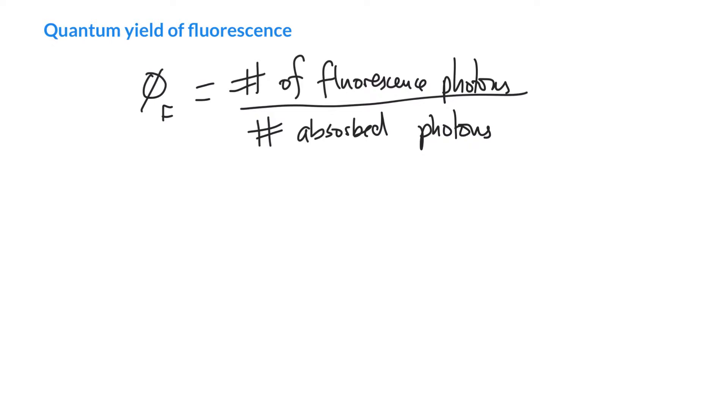Zero just means that no fluorescence photons come out. And one means that every single absorbed photon causes fluorescence.